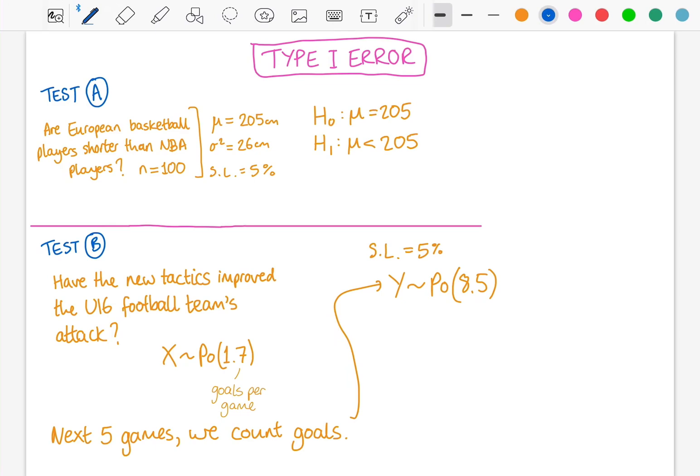Now, that also tells us how likely we are to make an error. If we are slightly more relaxed with our significance level, clearly we might be more prone to make an error in our hypothesis testing.